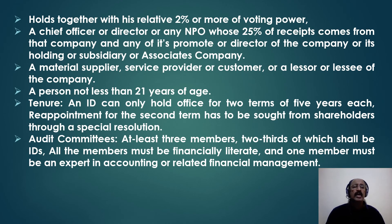The independent director and his relatives should not have more than two percent of voting power. He should not be part of an NPO which receives 25% or more from that company or its promoter directors. He should not be a material supplier, he should not be less than 21 years of age, and the term is for two terms of five years each, after which a gap must be maintained. Regarding audit committees, at least three members should be there, two-thirds of which shall be independent directors, and they should be financially literate, with one person being an expert in accounting or related financial management.